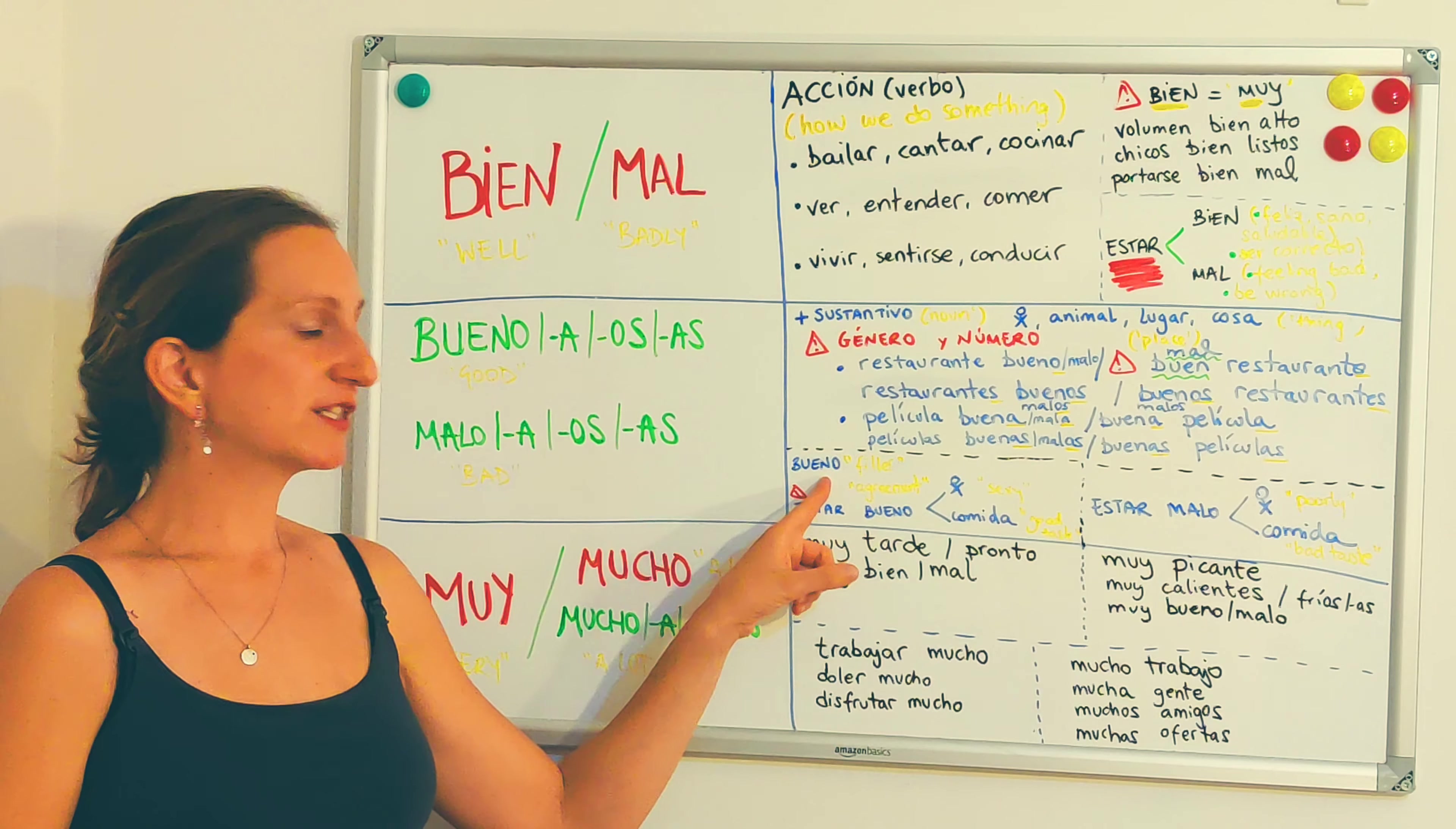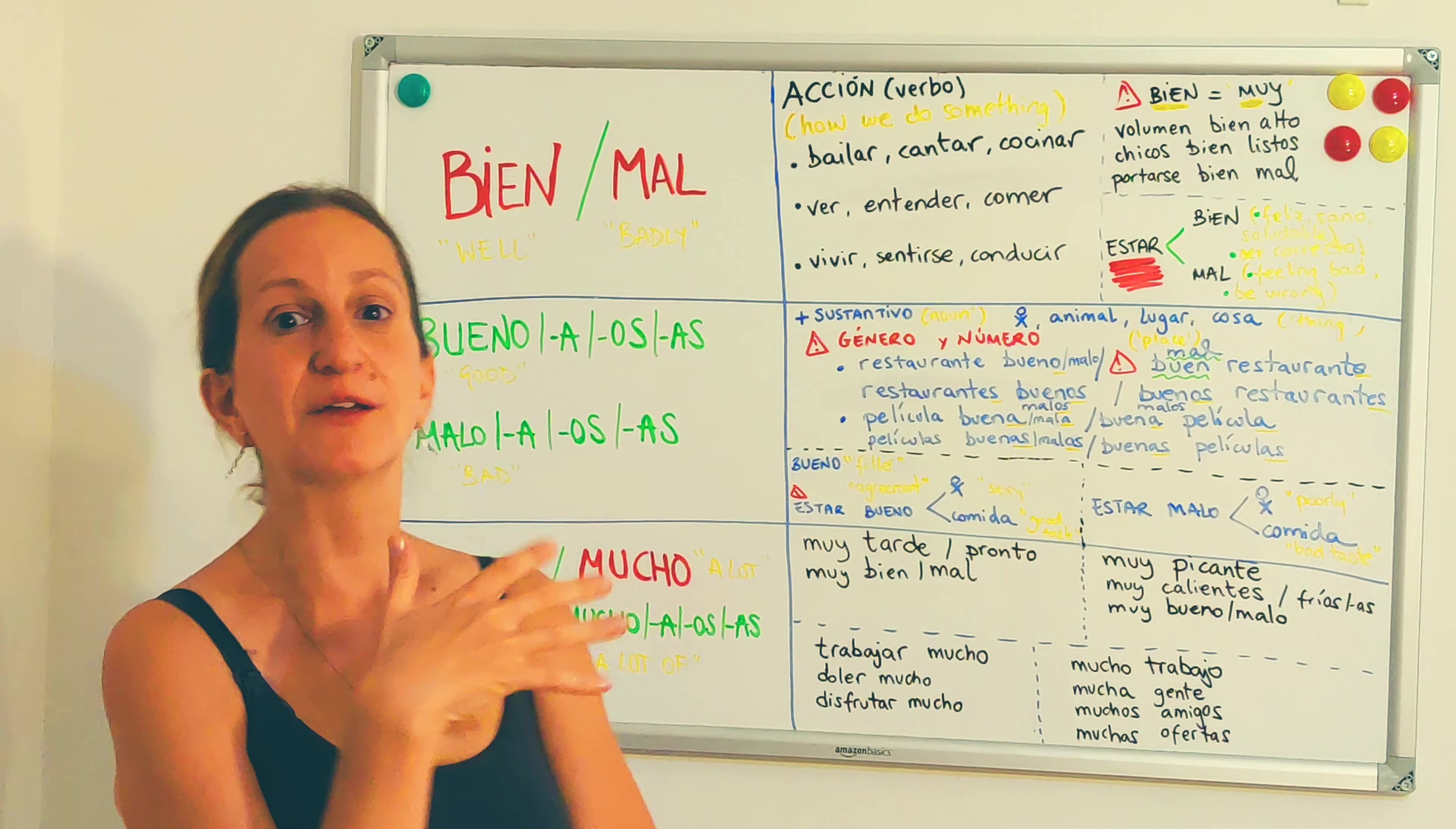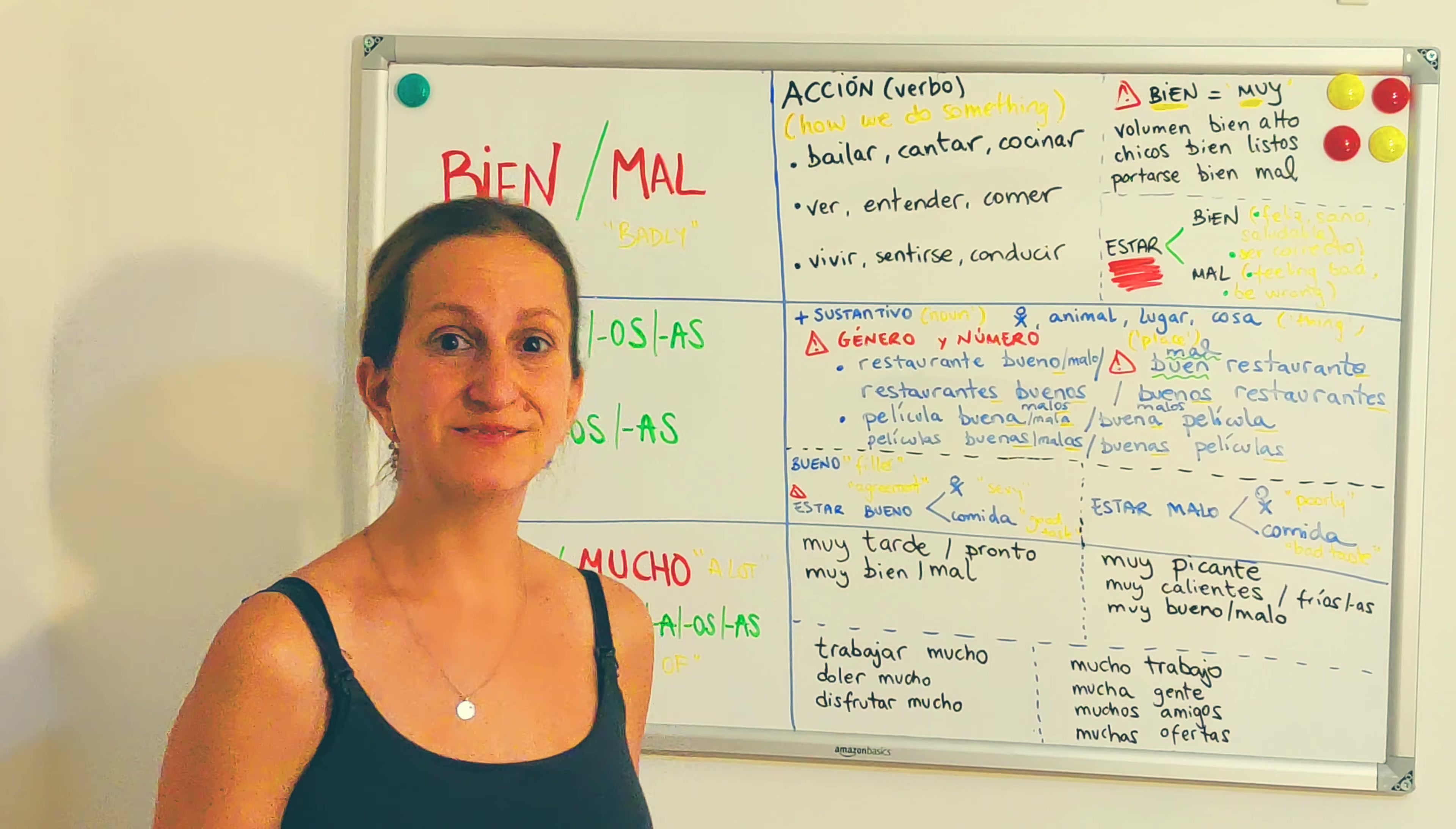Then, the word bueno, we use it as well as a filler, like bueno, when we want to start a phrase, a sentence, and we don't know exactly how to start. Like, it happens to me sometimes. We say bueno, a ver, and then you start whatever you want to say. A filler. And also, we use bueno when, for instance, someone says, should we go to the park? Vamos al parque. And you agree with that person saying, yeah, bueno, sí, venga, bueno.